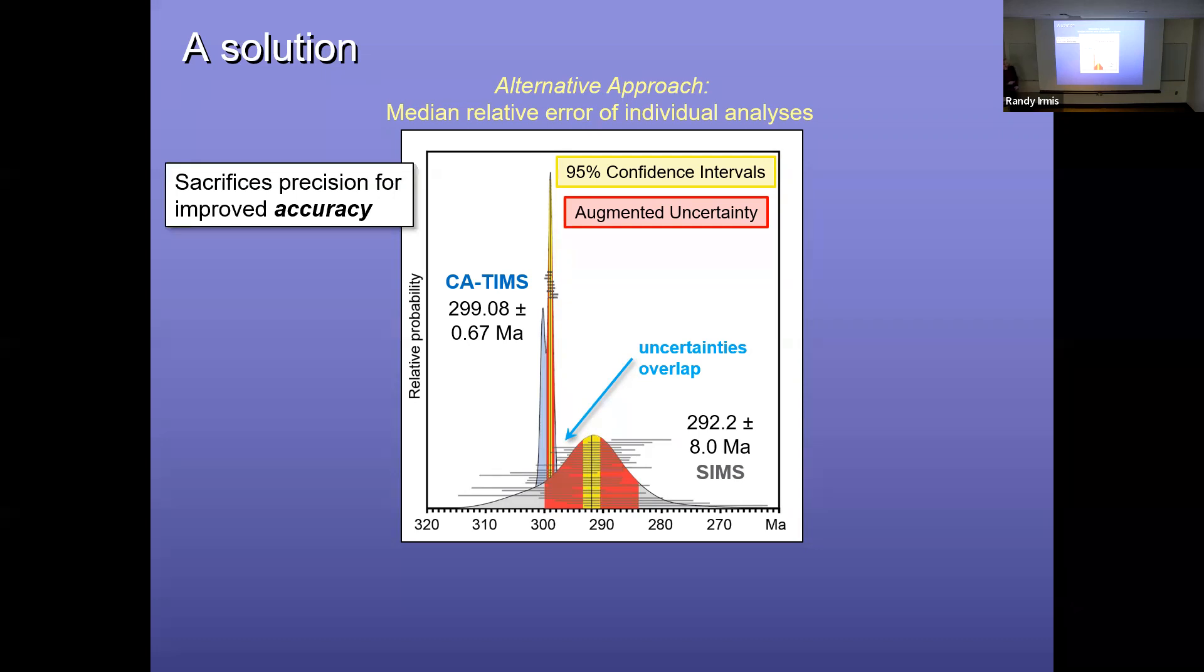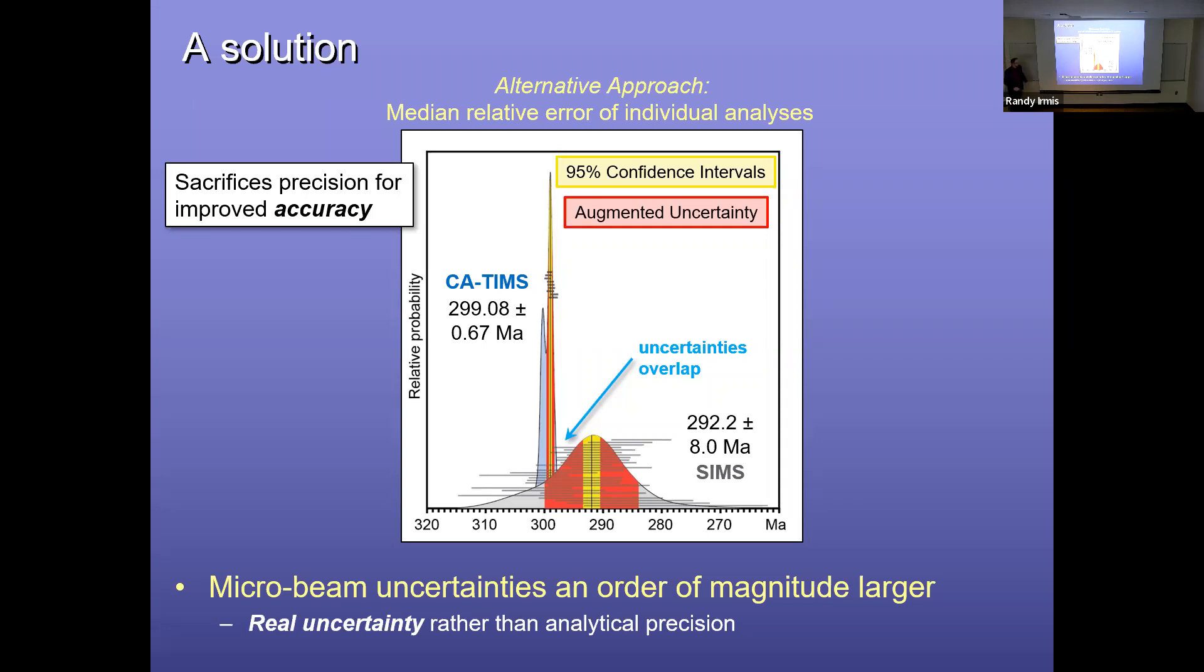And you can see visually, here's the uncertainty overlapping. So it sacrifices precision for improved accuracy, which a lot of people don't like, but I'm a scientist, so I'm after accuracy as much as possible. But I think it is important to remember that as a result, microbeam uncertainties in particular are an order of magnitude larger using this approach. But so far, it's the only approach we can find that will reliably extract accurate ages from microbeam data when compared to TIMS data. And this can also be applied to argon-argon dating as well. And it's reflecting perhaps a more realistic uncertainty than simply the analytical precision of the method applied.